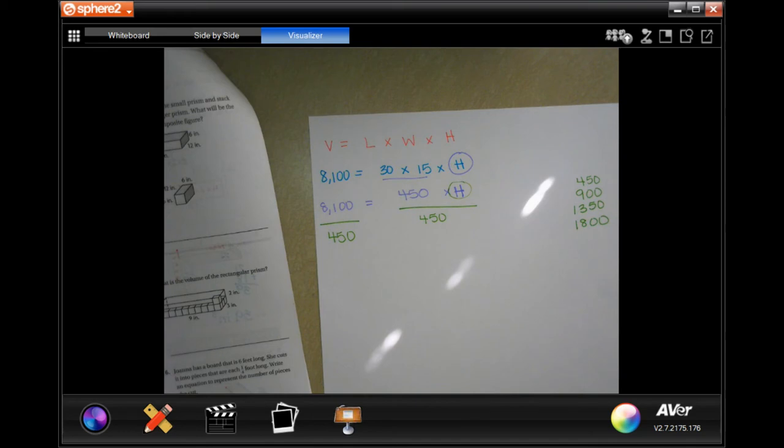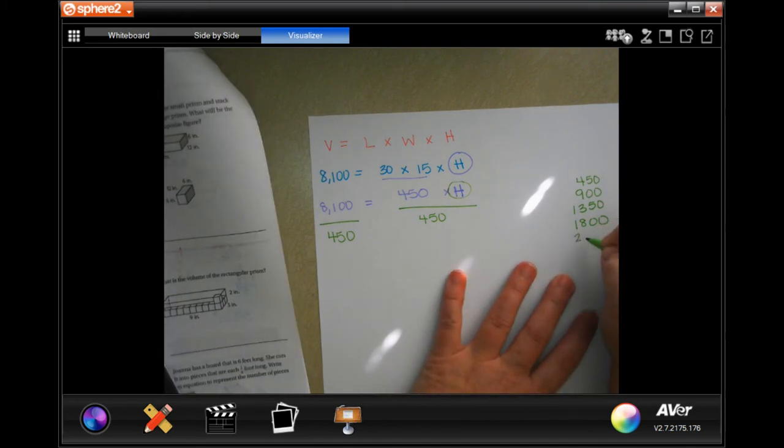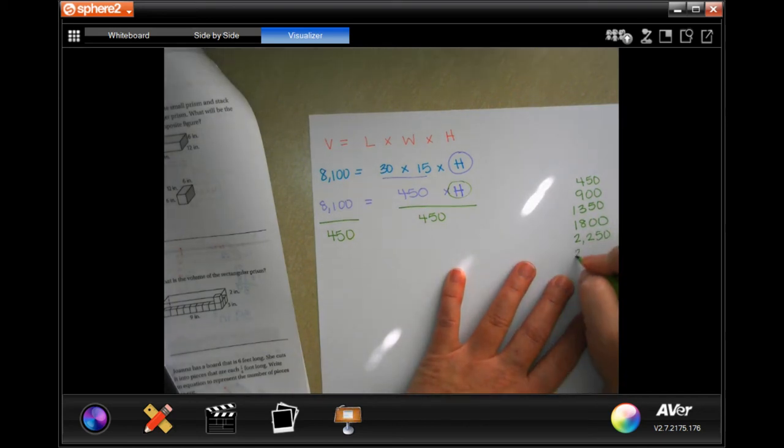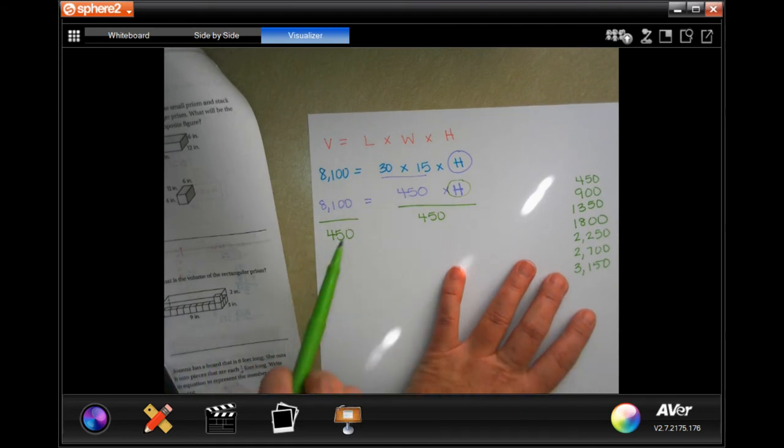It is okay to use your calculator to get multiples. It is not okay to use your calculator to get the answer. 2,250, 2,700, 3,150. I'm trying to get as close as I can. 450 is not going to go into 8 or 81, so 810.